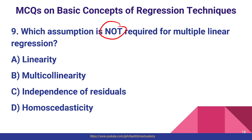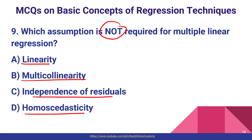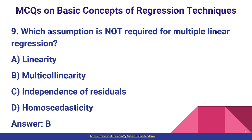Question number nine: which assumption is NOT required for multiple linear regression? The options are: linearity, multi-collinearity, independence of residuals, or homoscedasticity. Linearity, independence of residuals, and homoscedasticity are normally required. Multi-collinearity is not a required assumption — in fact it is a problem to avoid. So option B, multi-collinearity, is the correct answer as it is not required.